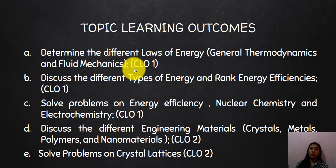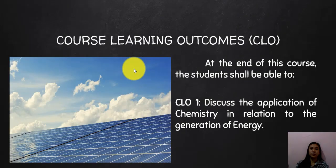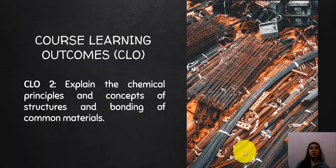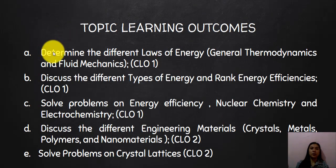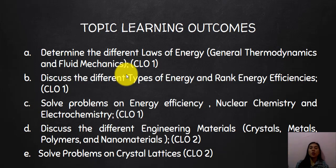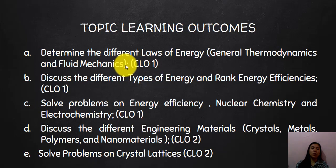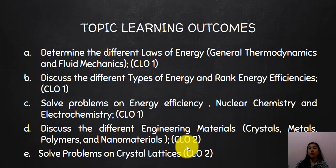Each PLO or topic learning outcome is aligned to a CLO that must be achieved. For example, CLO 1 says to discuss the application of chemistry in relation to the generation of energy. Topic learning outcomes (a), (b), and (c) all relate to CLO 1, while topic learning outcomes (d) and (e) achieve CLO 2.